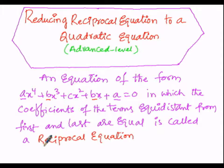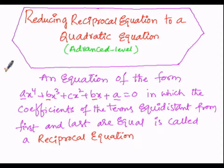We have to convert this reciprocal equation into a quadratic equation, so that we can solve it using the general form of a quadratic equation: ax² + bx + c = 0, either by the factorization method or by using the quadratic formula. This completes the definition of the reciprocal equation.